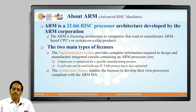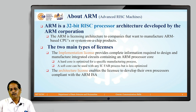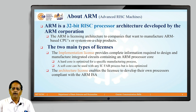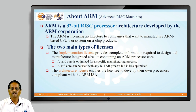ARM offers two types of licenses to these companies: one is the implementation license and one is the architecture license. In the implementation license, both soft core and hard core are offered. Soft core can be used with any IC fabrication process but is less optimized, while hard core is optimized for a specific manufacturing process. Architecture license enables the licensee to develop their own processor compliant with ARM ISA — ARM Instruction Set Architecture. These licenses are issued to chip manufacturing companies so they can adopt this design in their SoC (System on Chip) design.